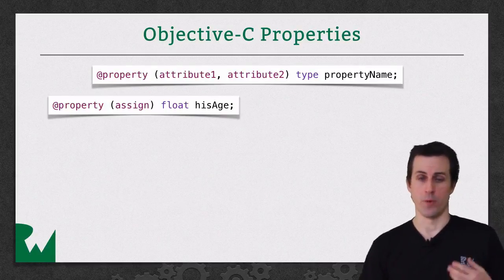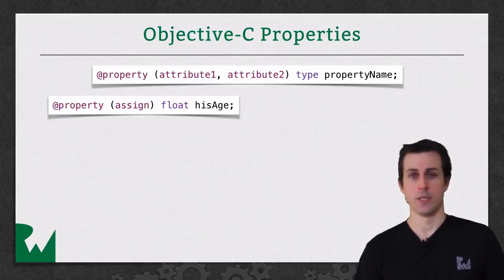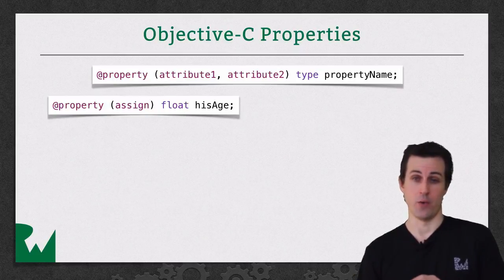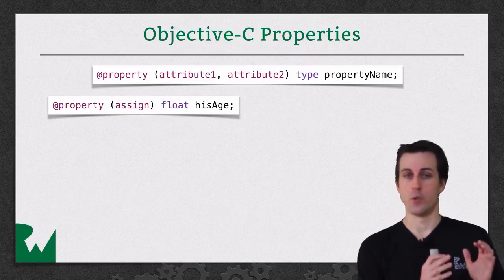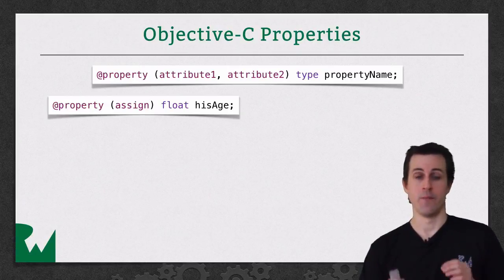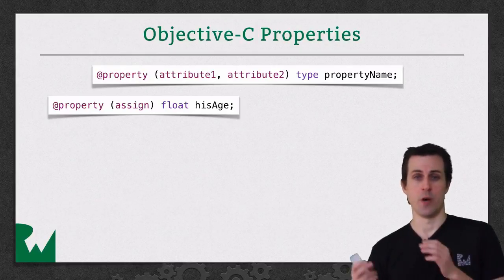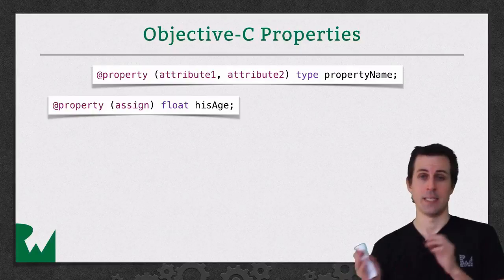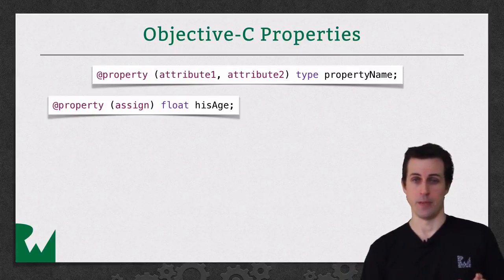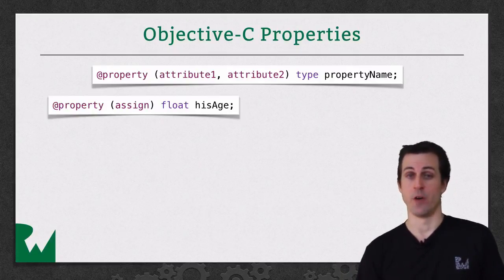Let's say you want to make a property for the date calculator we've been working on to store the his age value, which is a float. Well, you use the @property keyword, and then for your specifier, for a float, you want to use the assign specifier, which says there's no memory management involved. You just want to assign the value I pass in to this property without doing any fancy memory management on it.